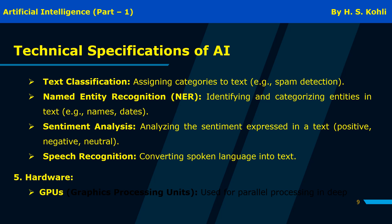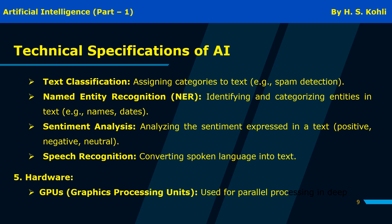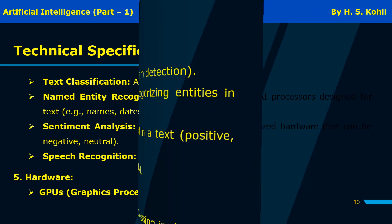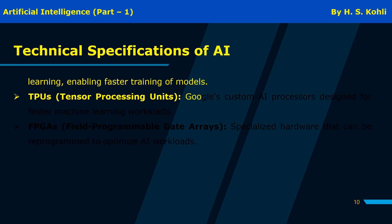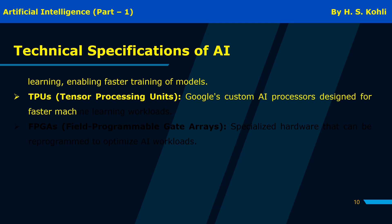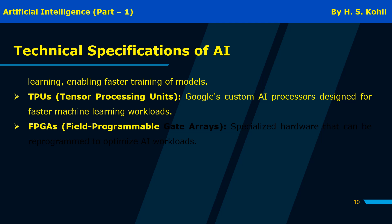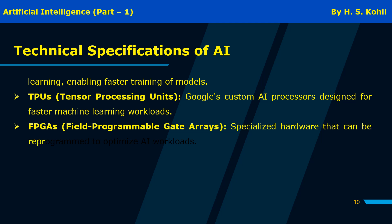In terms of hardware, GPUs (graphics processing units) are used for parallel processing in deep learning, enabling faster training of models. TPUs (tensor processing units) are Google's custom AI processors designed for faster machine learning workloads. FPGAs (field-programmable gate arrays) are specialized hardware that can be reprogrammed to optimize AI workloads.